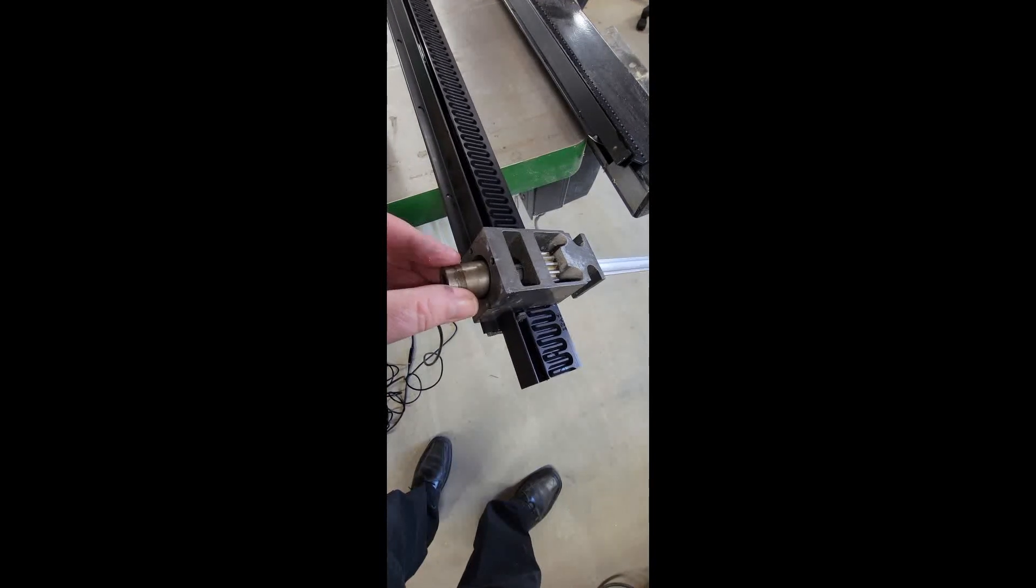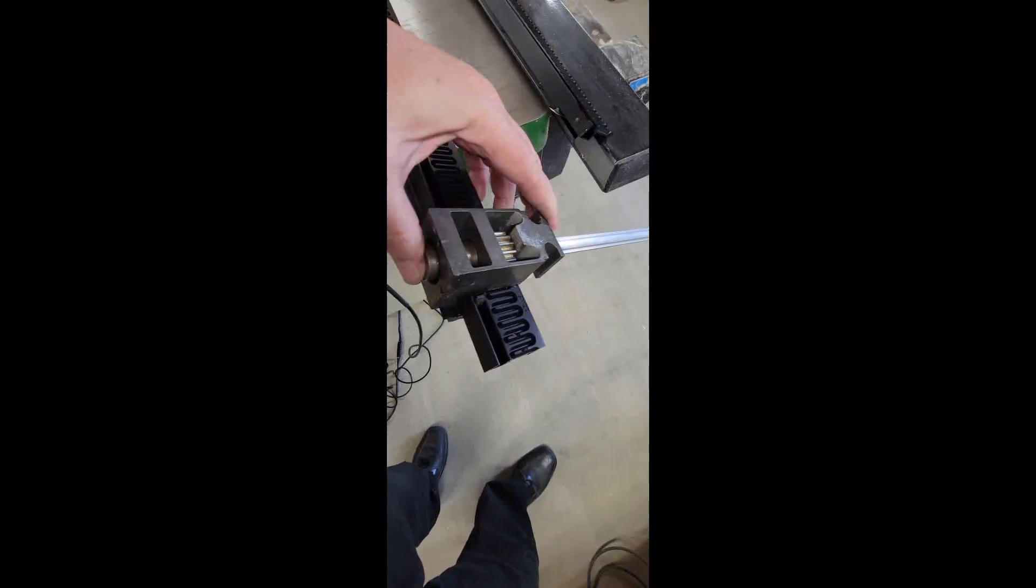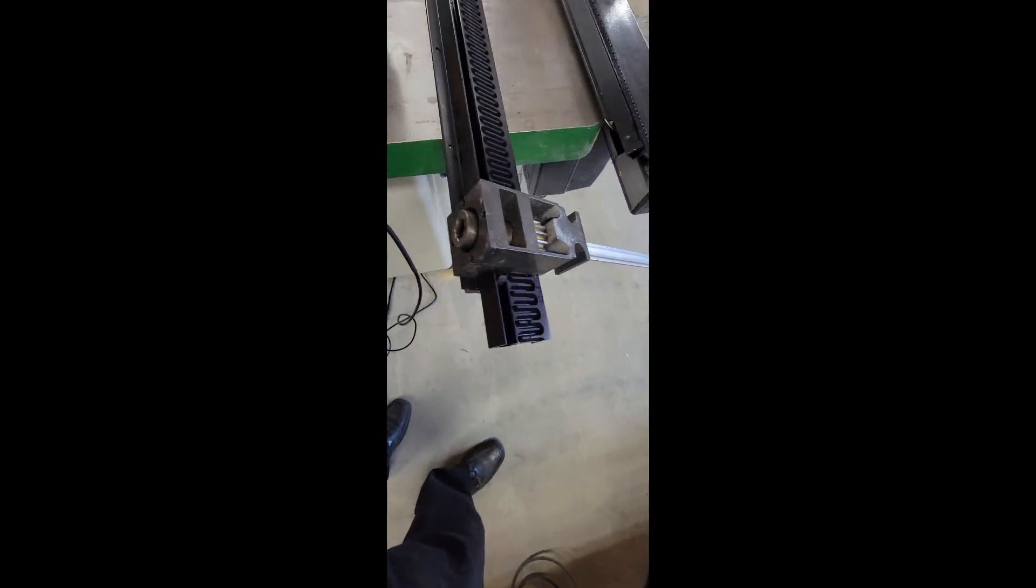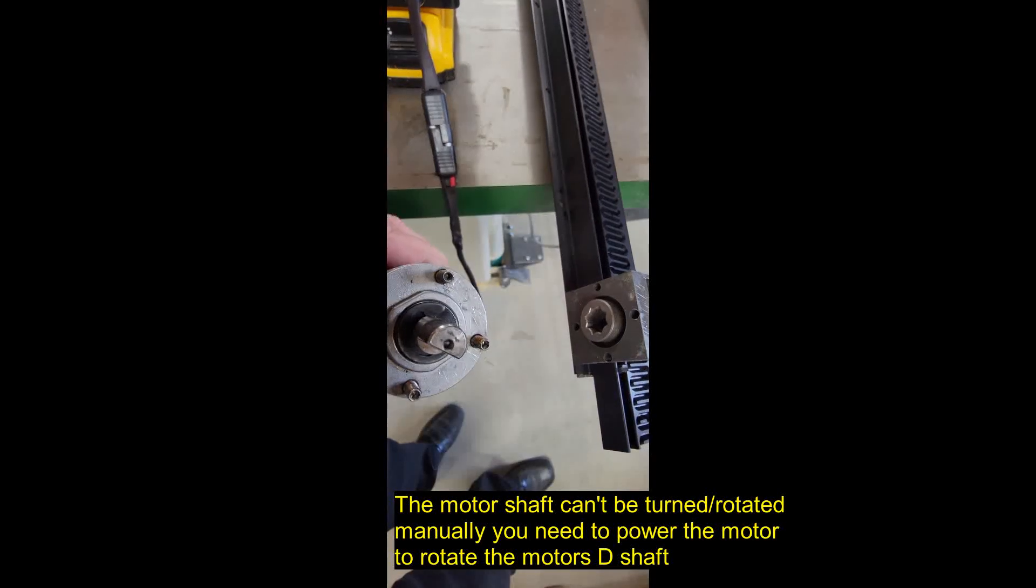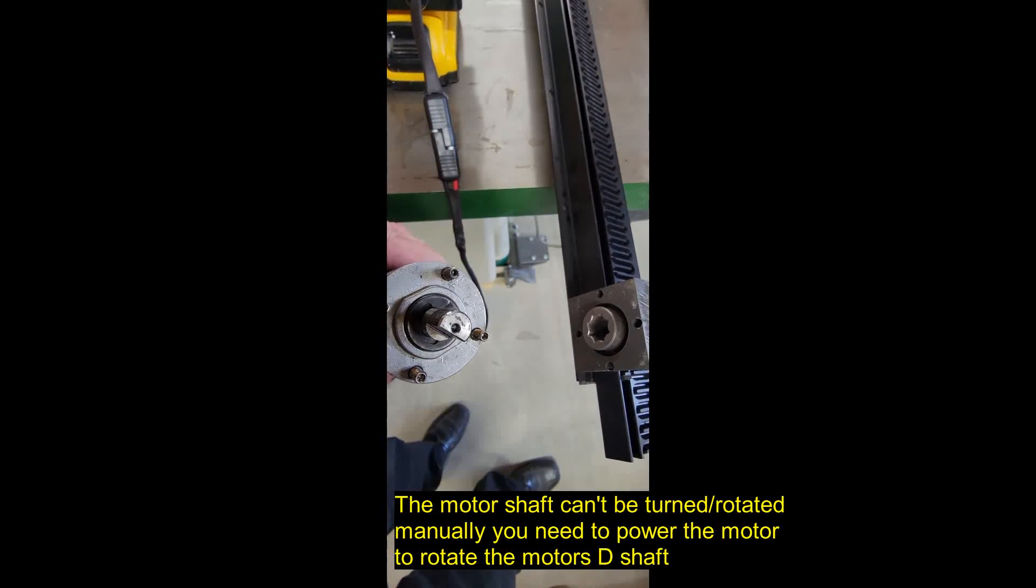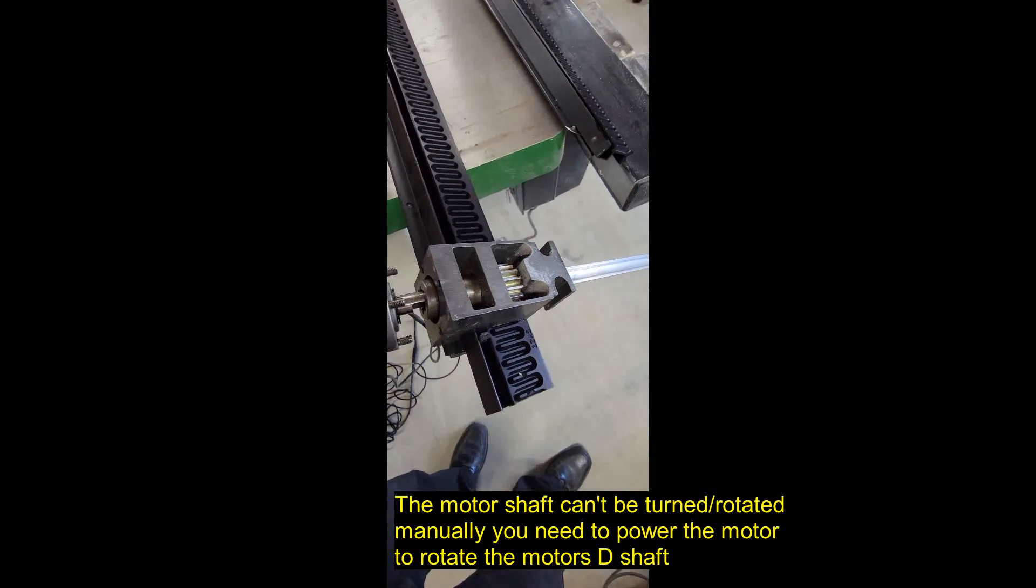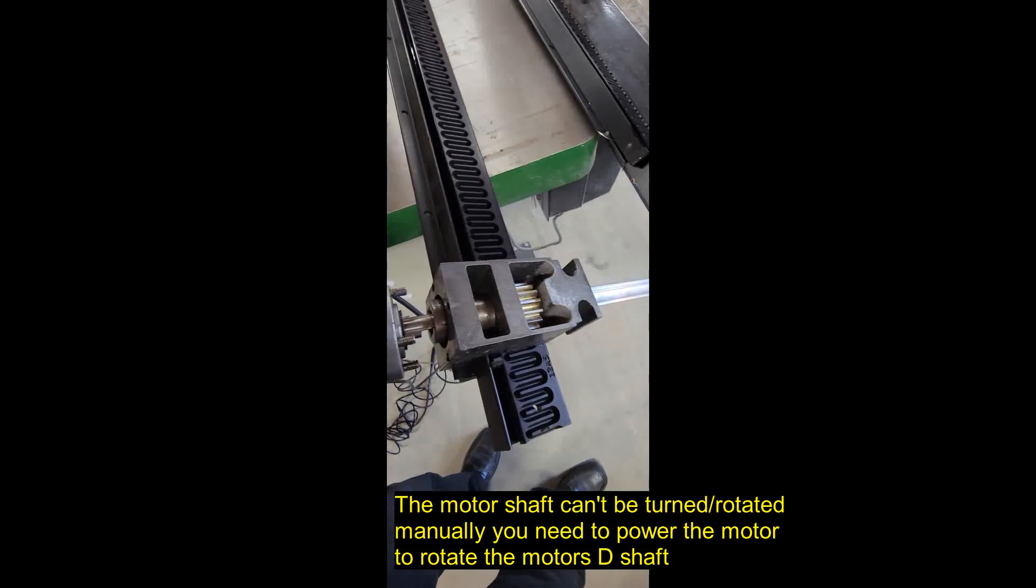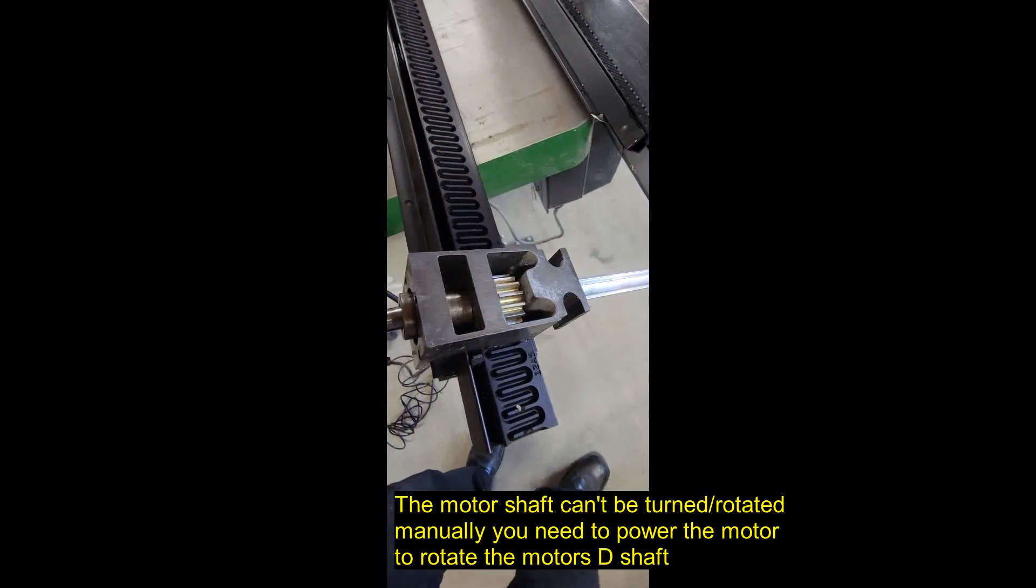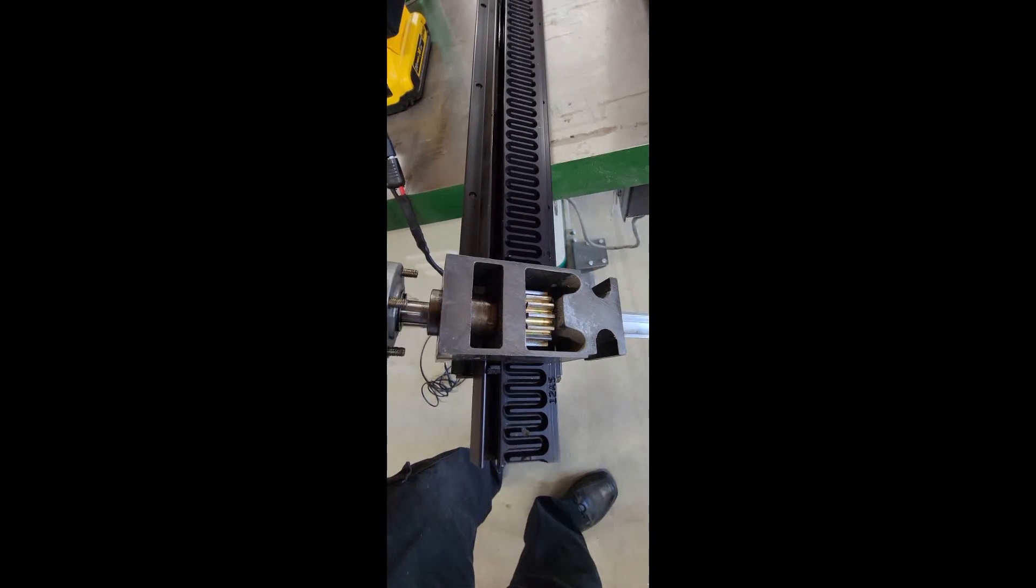That coupler lines up to this aluminum shaft right here. The coupler also has a little half or D shape cut out in it where the motor lines up. So you have to turn it and try to find out where that D shape is. Let's see if we can get it, trying to do this one-handed.